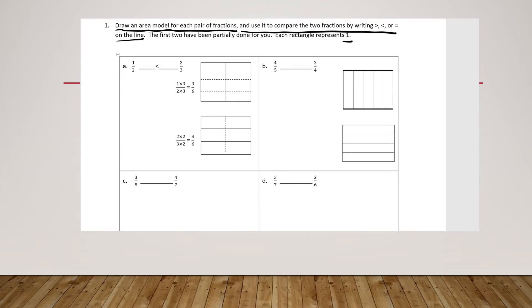So if we look at B, for example, we have four fifths compared to three fourths. And they started our tape diagrams for us, our area model, so we can shade in.